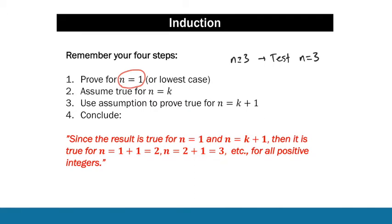Step two: assume the result is true for n equals k. k is just an unknown integer that falls in the domain you're asked to prove for. So if we were asked to prove for n greater than or equal to 3, then k would be an integer greater than or equal to 3. We then use this assumption to prove the result is true for n equals k plus 1, which always involves substituting the assumption in some way.